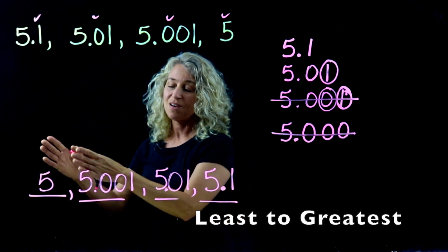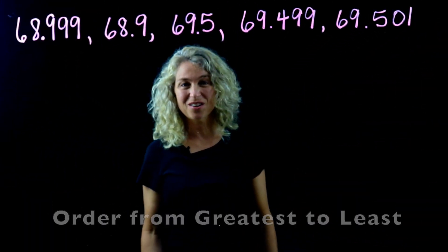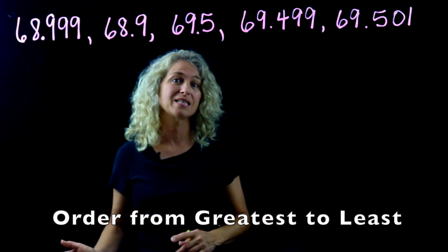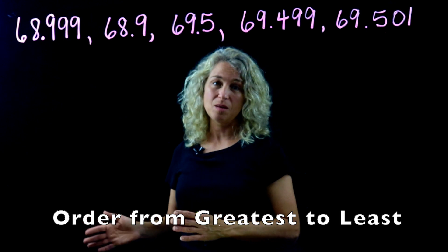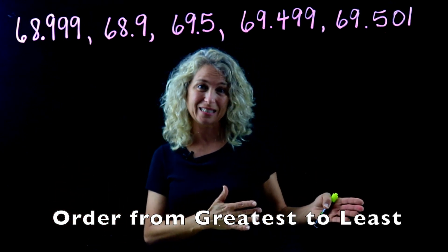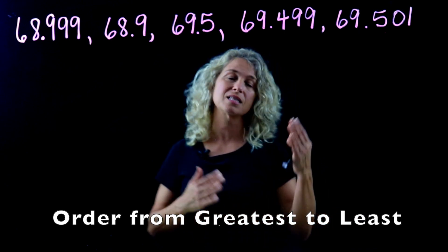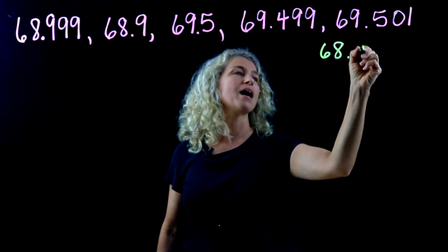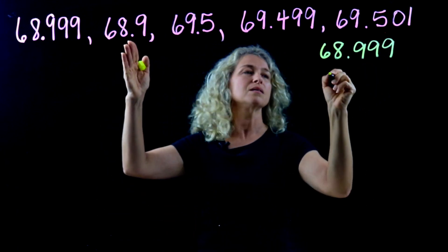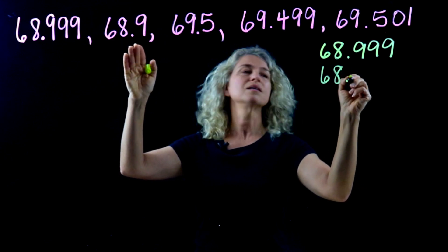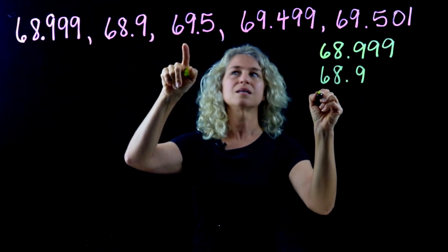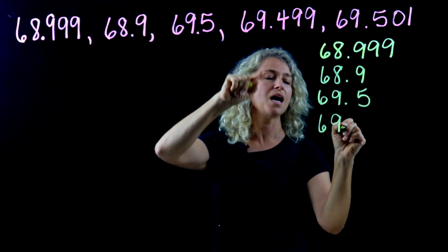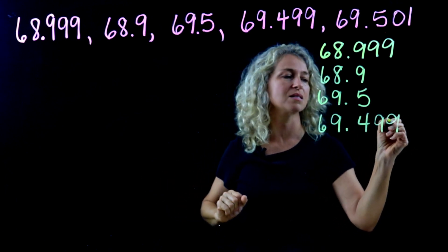Check: one, two, three, four numbers ordered least to greatest. Here's our last example — notice something different: we're asked to order from greatest to least, so be careful. Let's stack the numbers with decimals aligned: sixty-eight and nine hundred ninety-nine thousandths, sixty-eight and nine tenths, sixty-nine and five tenths, sixty-nine and four hundred ninety-nine thousandths.